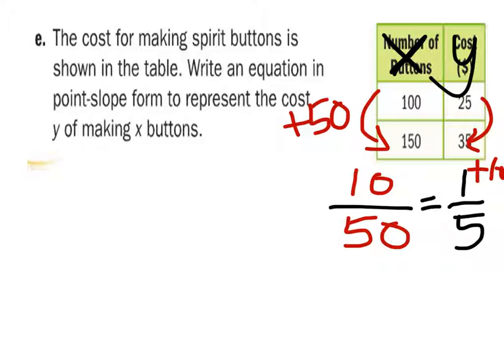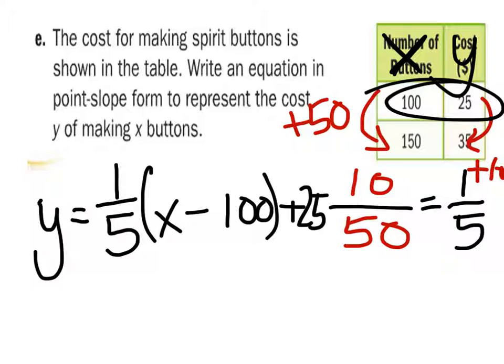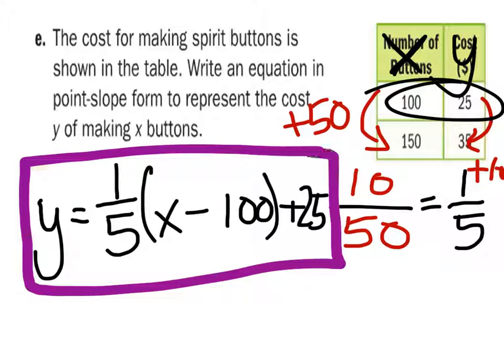Now that you've gotten this far, to get to point-slope form, you've got Y equals one-fifth. Do not use decimals. X minus, which of these two values do you want? 125 or 150? Let's use this one. So the X value is 100, and the Y value is 25. That's it. This is one of the point-slope forms that you can use. Start on the homework.